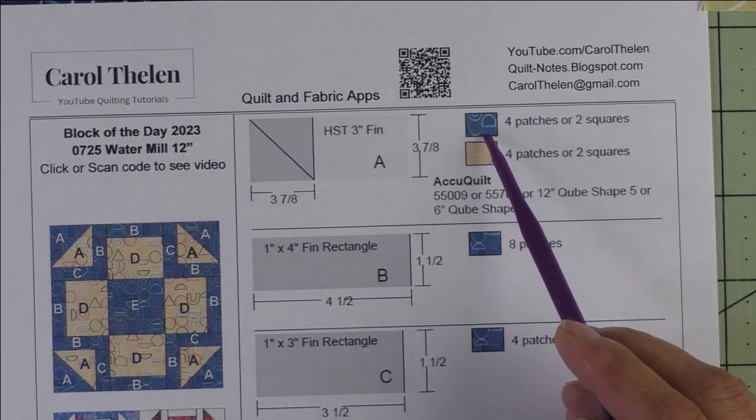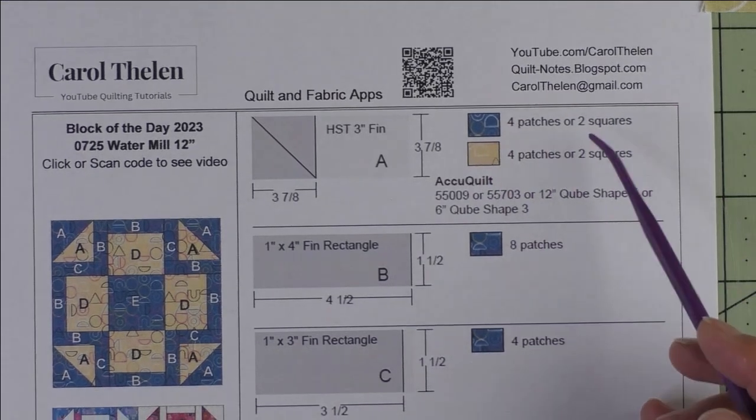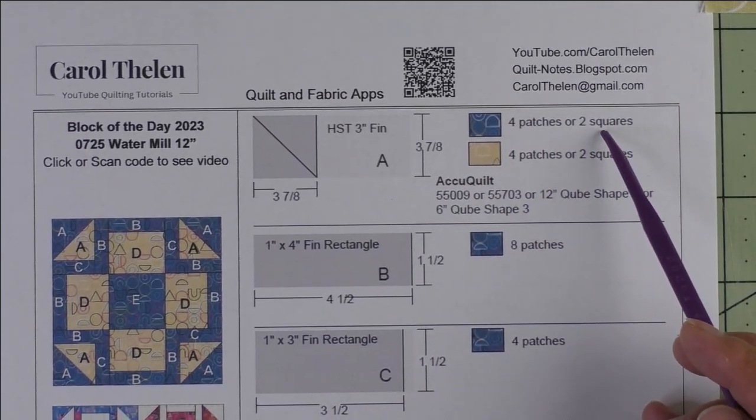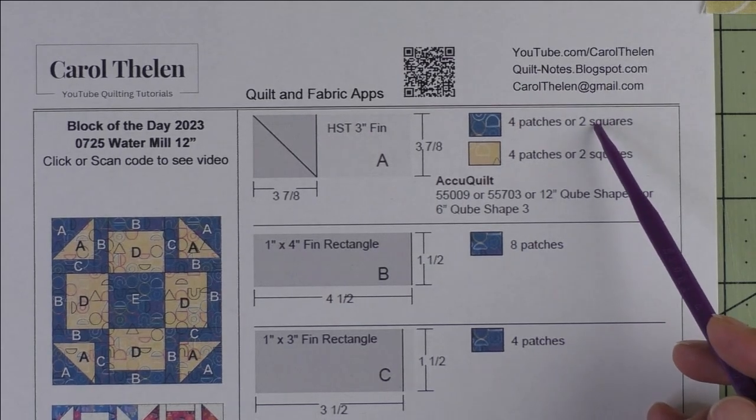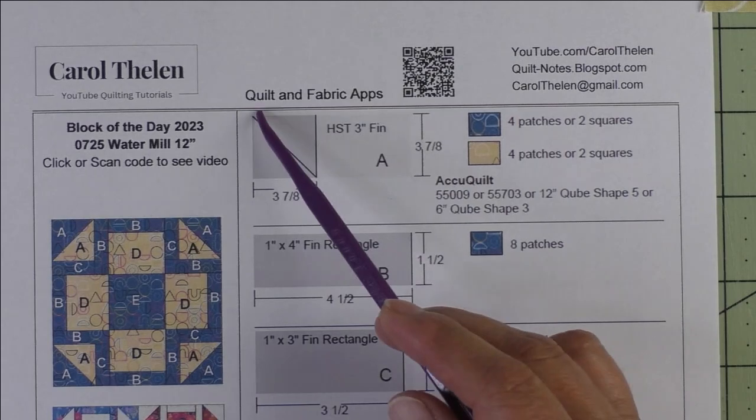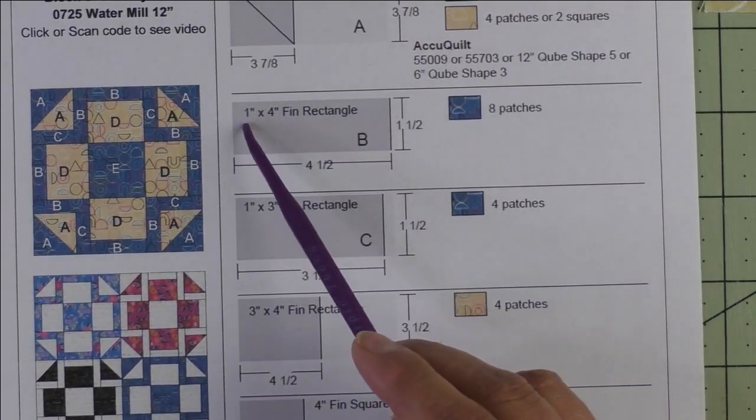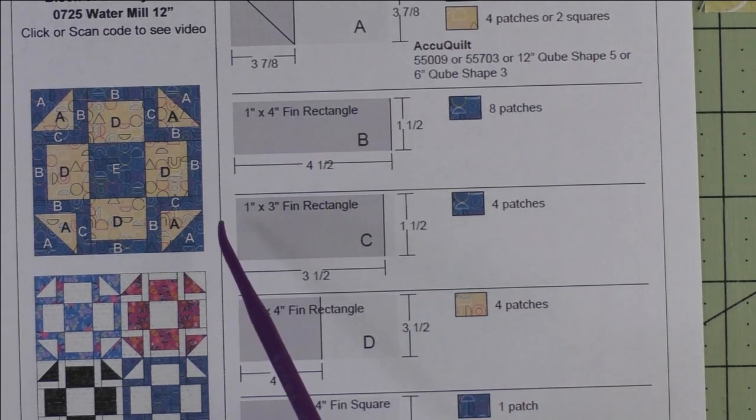If you're using patches, you'll need four patches each of the light and the dark. We're going to use the two at a time half square triangles, so we'll need two squares of each fabric. That means you'll cut the squares but you will not sub cut them. Patch B is a one inch by four inch finished rectangle. We cut three and a half inch by one and a half inch rectangles.